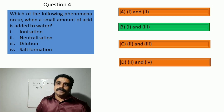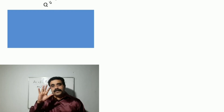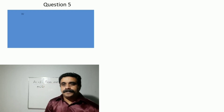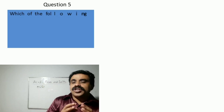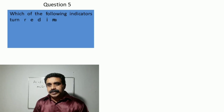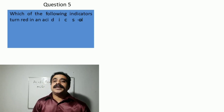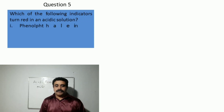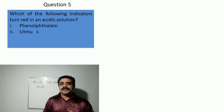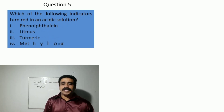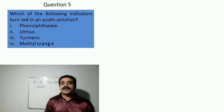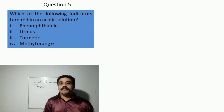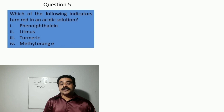Question number five: which of the following indicators turn red in an acidic solution? 1. Phenolphthalein, 2. Litmus, 3. Turmeric, and 4. Methyl orange. Choose the correct options.